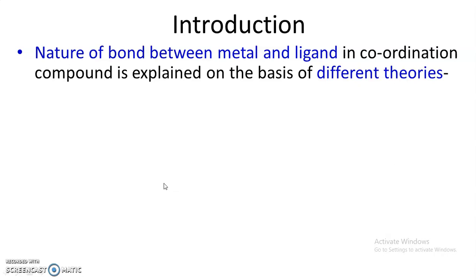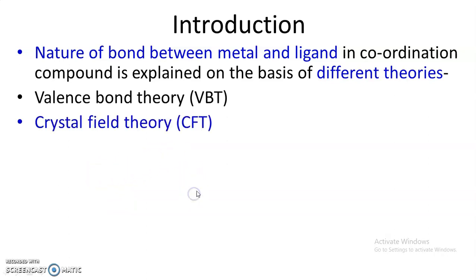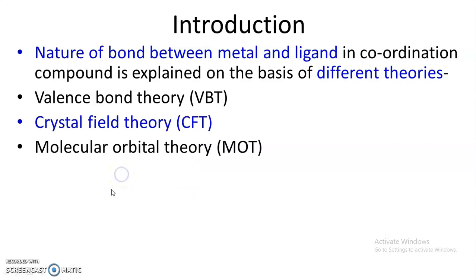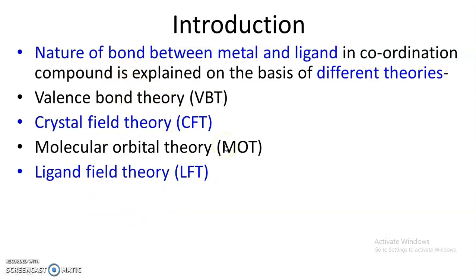The nature of the bond between metal and ligand in a coordination compound is explained on the basis of different theories: valence bond theory, crystal field theory, molecular orbital theory, and ligand field theory. Valence bond theory was studied at the SYBSC level. This year we are focusing on crystal field theory and molecular orbital theory, starting with the formation of the bond between metal and ligand on the basis of crystal field theory.